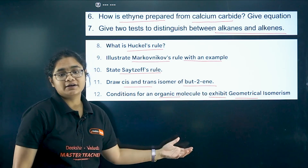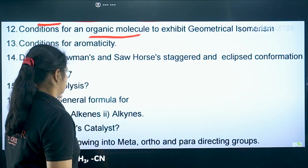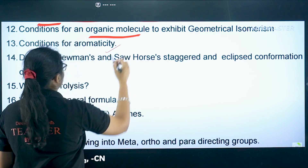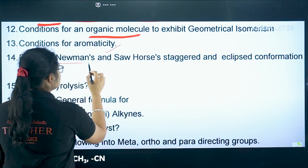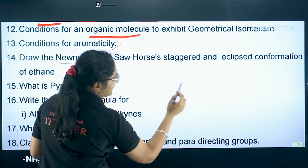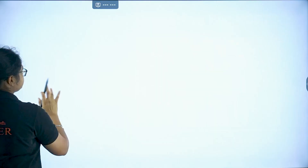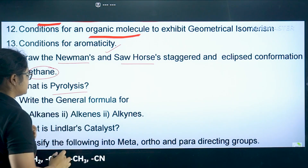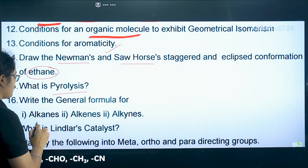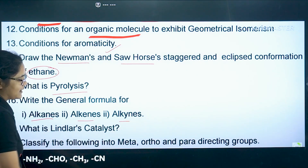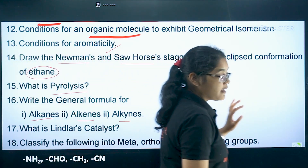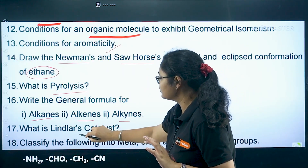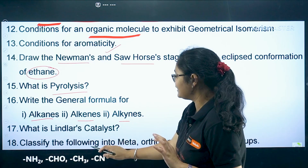Conditions for aromaticity, Newman's projection and sawhorse projection and eclipsed projection of ethane. What is pyrolysis? You need to know the general formula of alkanes, alkenes, and alkynes — this is very basic. Also, Lindlar's catalyst.